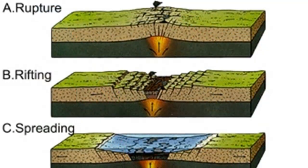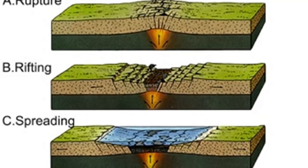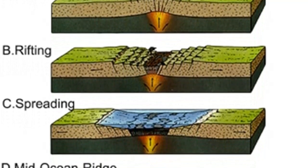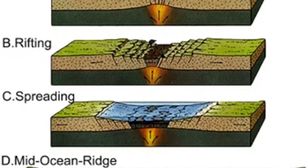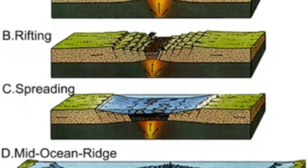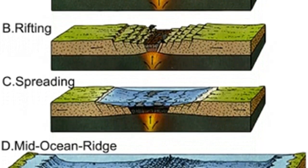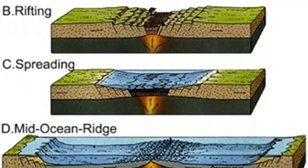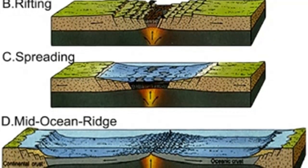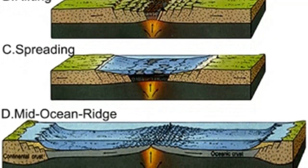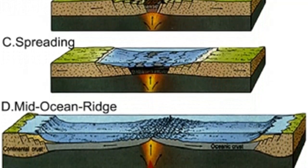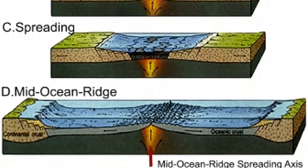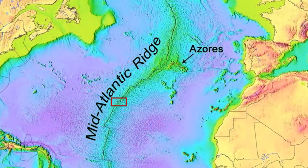If spreading continues, the Red Sea will grow wider and develop an elevated oceanic ridge similar to the mid-Atlantic Ridge. As new oceanic crust is added to the diverging plates, the rifted continental margins move ever so slowly away from one another. As a result, the rifted continental margins that were once situated above the region of upwelling are displaced toward the interior of the growing plates. Consequently, as the continental lithosphere moves away from the source of heat, it cools, contracts, and subsides.